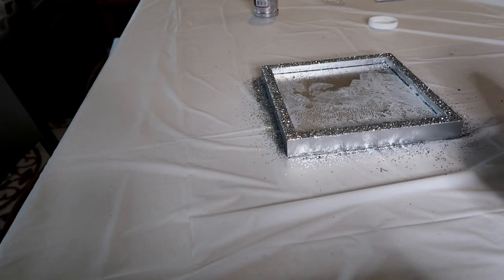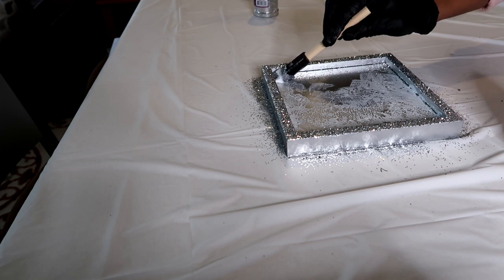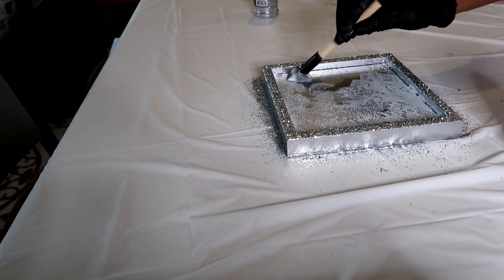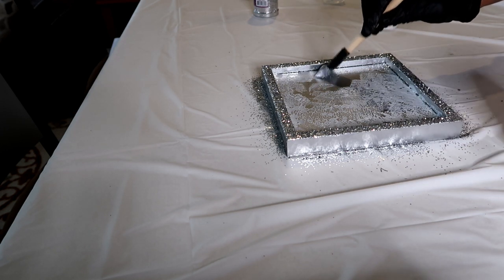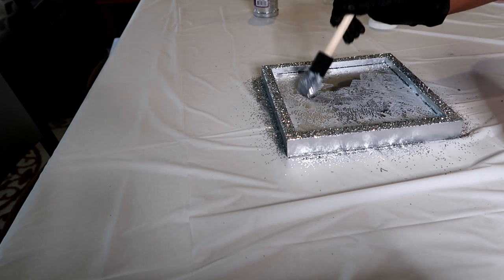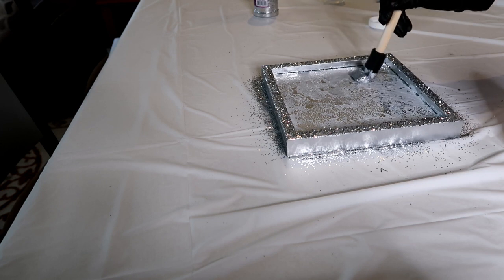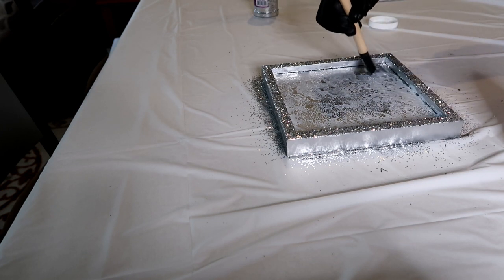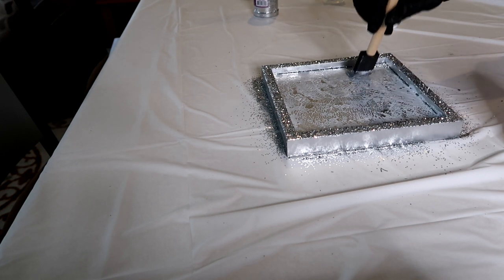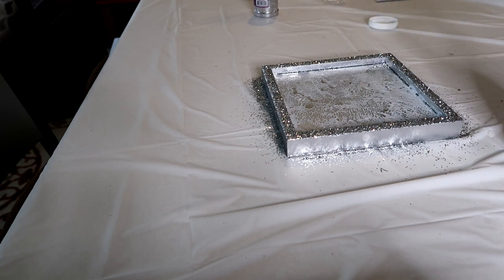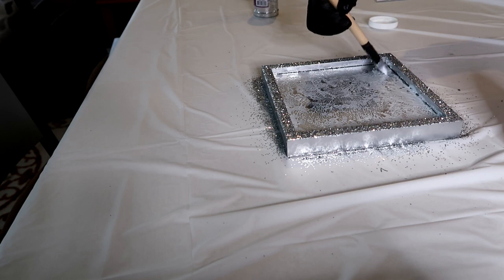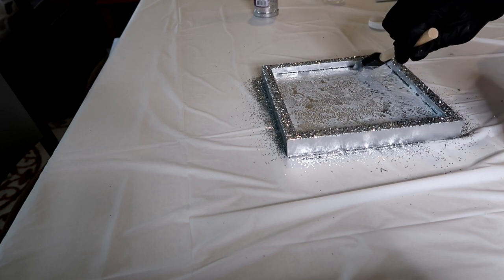What we're going to do after we're done is pretty much the same thing we did on the top of the picture frame. We're going to put the Mod Podge on the sides and pour the glitter over the side. We will have to let this dry. I usually let everything dry overnight. That's just a rule of thumb for me. I know it's completely dry in 24 hours.